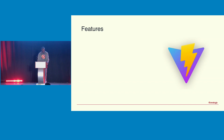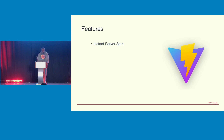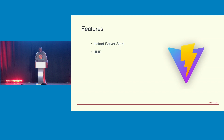Some of the key features of Vite include instant server start — the quicker you spin up your front-end app, the quicker you can start developing features. It also has HMR, or hot module replacement, where you can make changes and it will pinpoint which individual files need to be recompiled and serve them dynamically at development time without rebuilding the entire app.